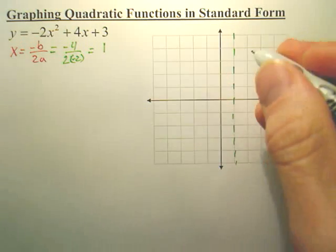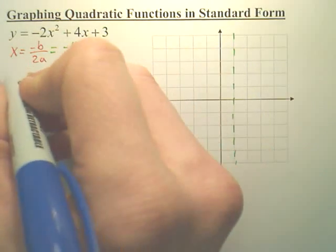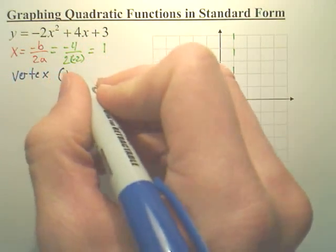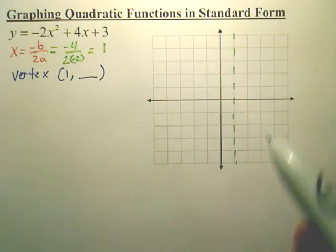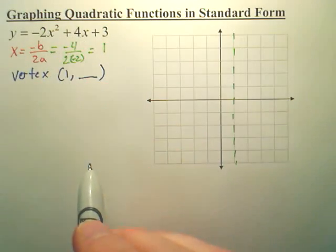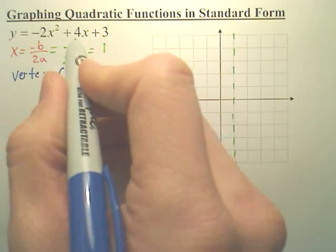Now I also know my vertex is going to be somewhere on here. So my vertex is going to be (1, something). A quick way, instead of plugging in 1,